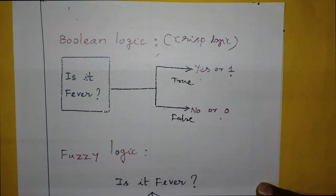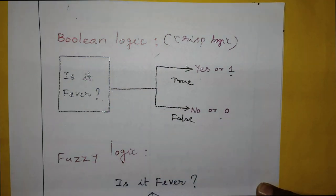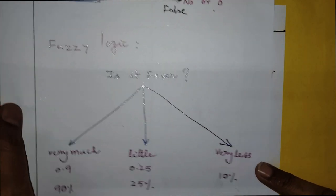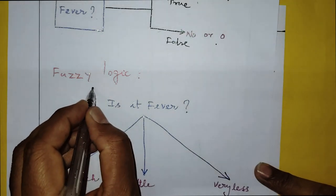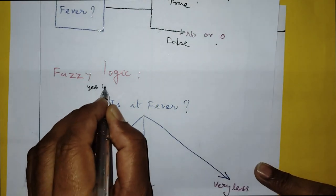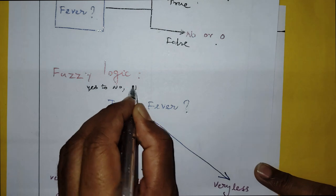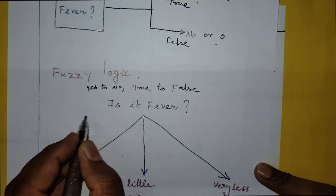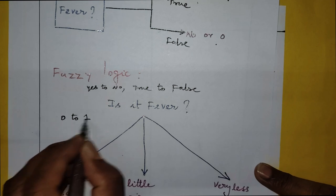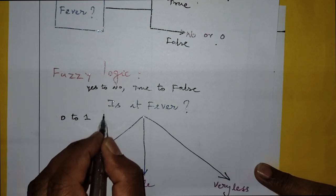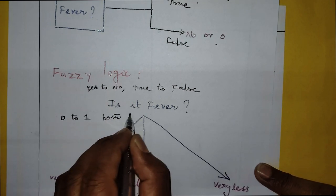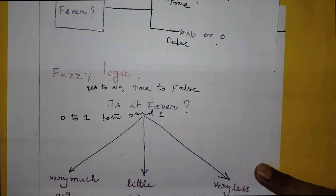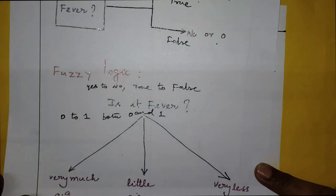That is known as crisp logic. Now what about fuzzy logic? Fuzzy logic values vary from yes to no, or true to false, or zero to one — it includes both zero and one. That is what fuzzy logic is about.